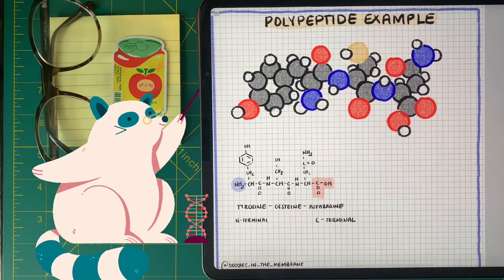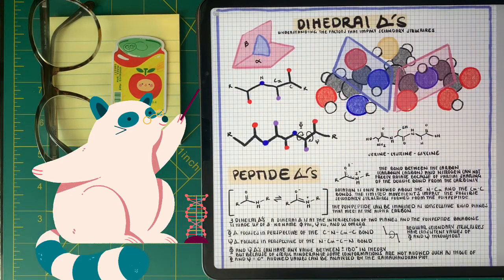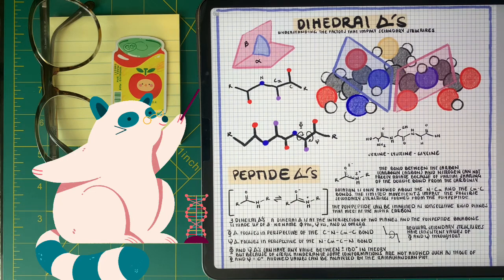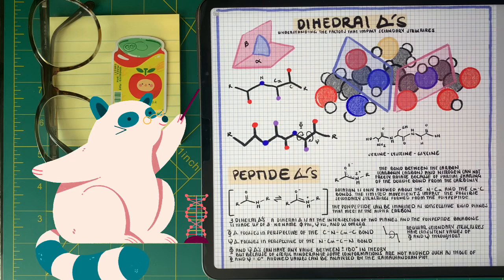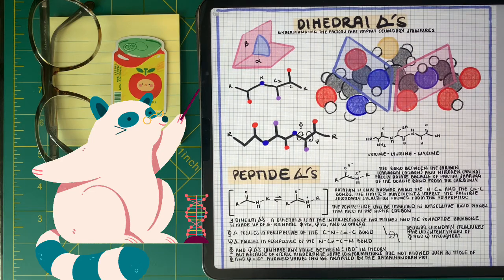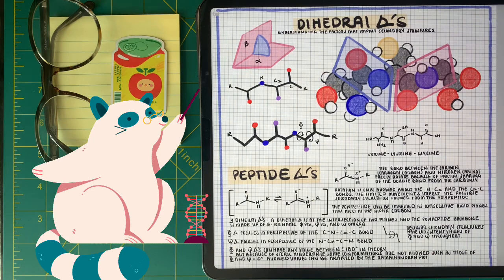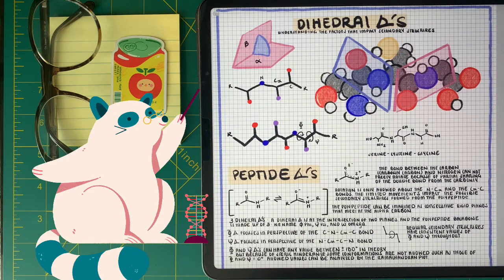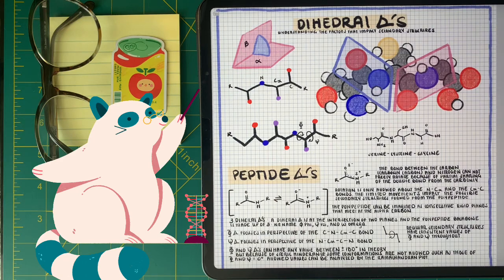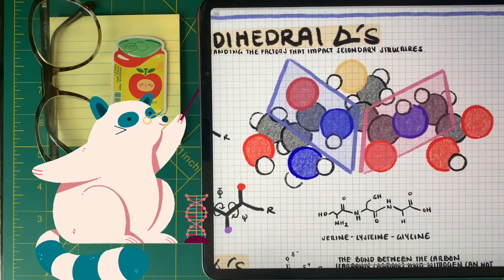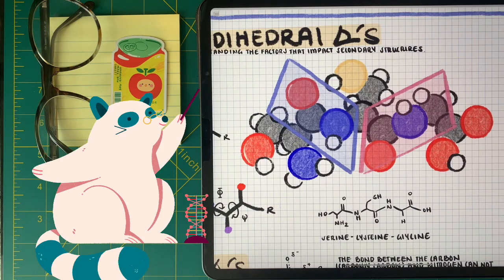In order for us to talk about secondary structures, we're first going to talk about one property about polypeptides that kind of limits the possible secondary structures in which we can form. It's the very fact that certain bonds in the polypeptide chain cannot fully rotate 180 degrees. This is because the carbonyl carbon and the bond between the carbonyl carbon and the nitrogen cannot rotate. This is because we have a partial resonance structure between the double bond of the oxygen and the nitrogen. So when looking at the polypeptide chain, we're only allowed rotation between the bonds of the nitrogen and the alpha carbon. Remember the alpha carbon is the carbon attached to the R group and the alpha carbon and the carbonyl carbon. So we're only limited to two bonds that can fully rotate.